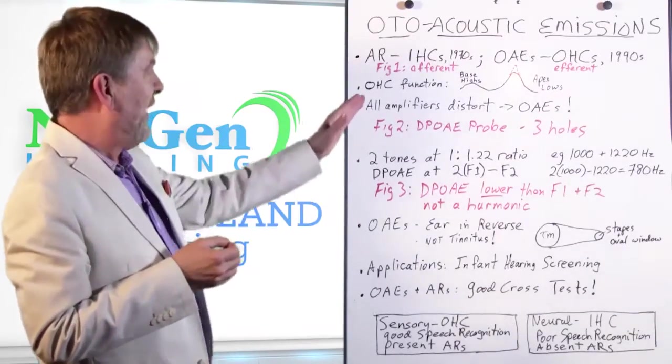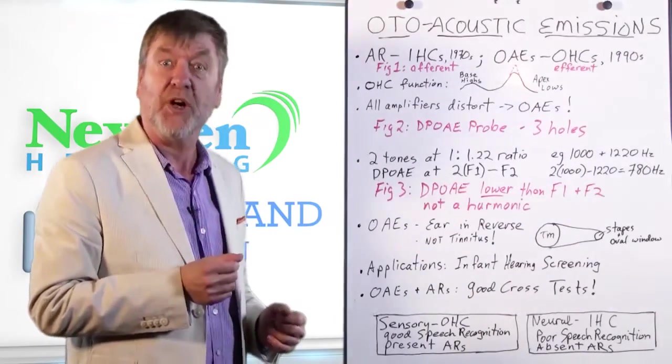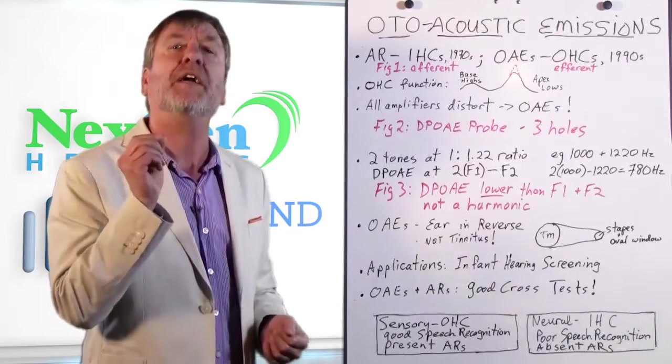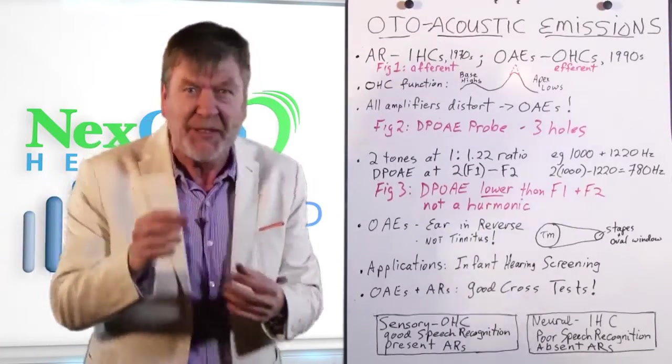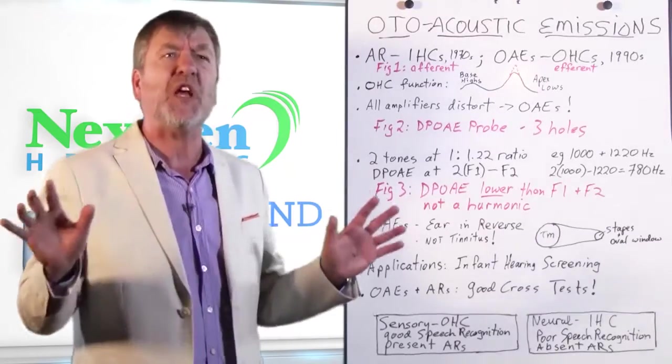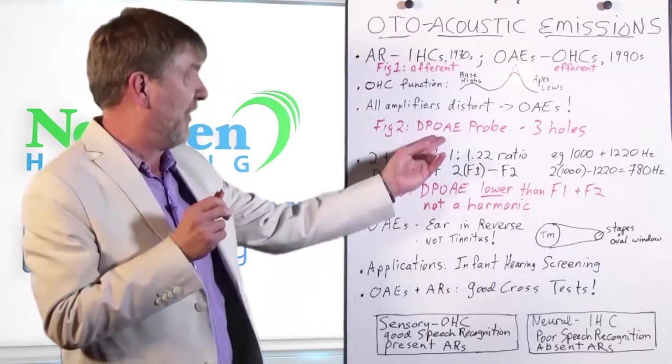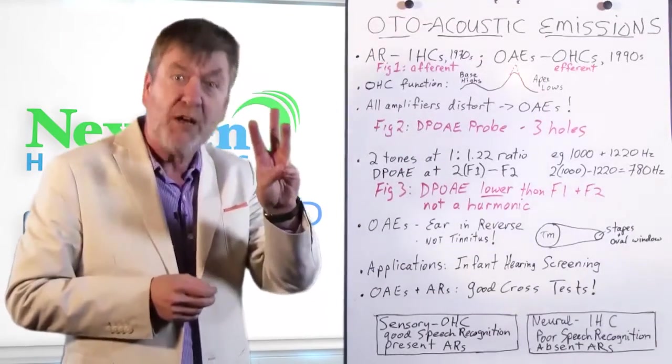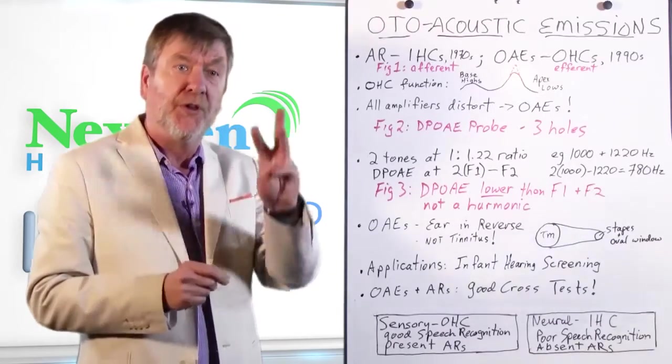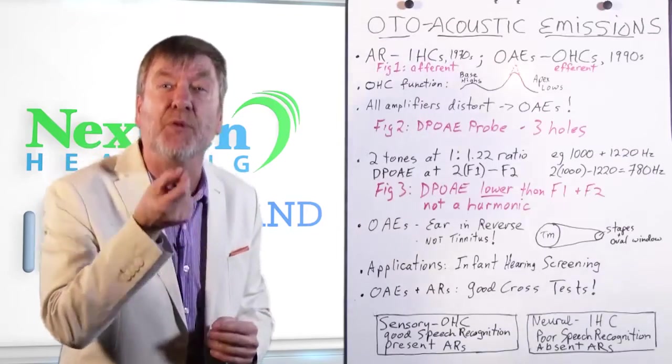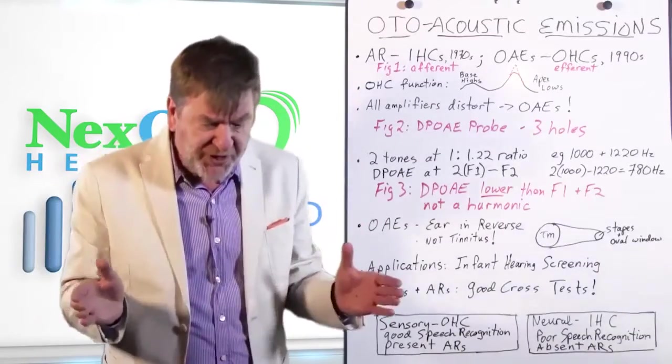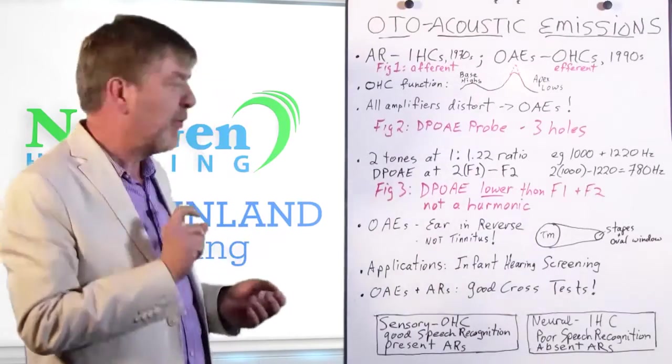So now let's cut to the chase as to how we measure otoacoustic emissions. All amplifiers we said distort, so you've got otoacoustic emissions. How do we measure them? Well, like tympanometry, we put a probe in the ear canal. It doesn't have to be airtight like in tympanometry, because you're not changing air pressure inside the ear canal. The room just has to be generally quiet. Now, like tympanometry, Figure 2 will show you, it's got three holes. Two of the holes are tiny speakers, and they emit, each of them, a separate tone. The third hole is actually a microphone that picks up the resultant distortion product otoacoustic emission. Here's how it works, the client is seated, the probe is put into the ear canal, and the two frequencies are put out.